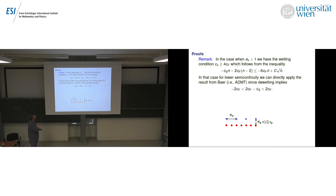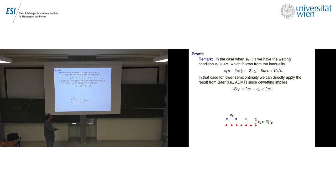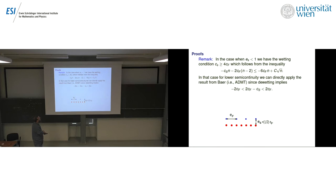Let me mention that in the case when E_S is less than 1, the wetting condition changes slightly because film atoms can be in contact with each other and also with the substrate simultaneously. In this case, there is no oscillating potential near the substrate atoms, so one does not need the strip argument — you can simply use lower semi-continuity directly, and there are no oscillation issues.